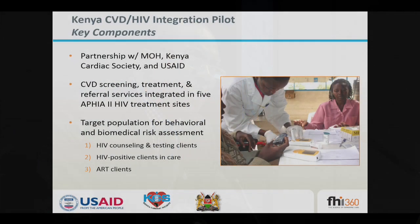In Kenya, this program was in partnership with the Ministry of Health, the Kenya Cardiac Society, and the United States Agency for International Development. CVD screening, treatment, and referral was provided in five facilities in the Red Valley in Kenya. The population was segmented: HIV testing and counseling clients — both HIV positive and negative — those in pre-ART care, and those on treatment.